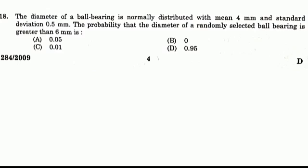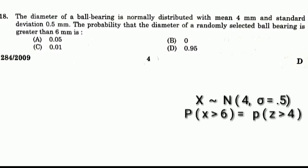Question number 18: The diameter of a ball bearing is normally distributed with mean 4 mm and standard deviation 0.5 mm. The probability that the diameter of a randomly selected ball bearing is greater than 6 mm — Options: A: 0.05, B: 0, C: 0.01, D: 0.95. Using standard normal table, Answer: B (≈ 0).